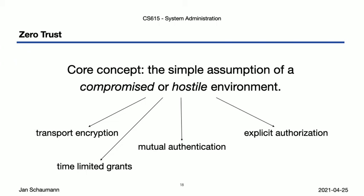A system's access capabilities derive explicitly from its identity, such that its access can be audited, extended, restricted, or revoked, and is not inherited implicitly from any specific physical or logical position within the network.